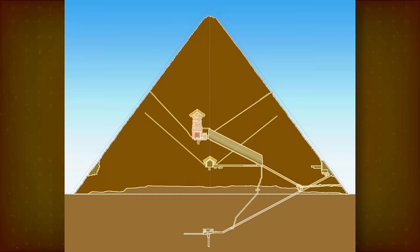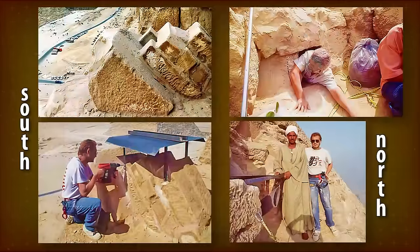The Great Pyramid shafts are four narrow conduits that stretch out and upward from both the king's and queen's chambers. The ones in the king's chamber reach the surface. Here's how they look like outside.